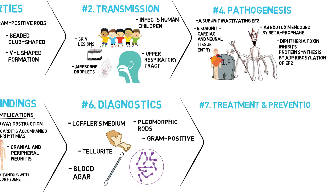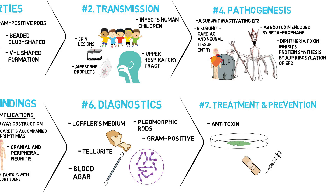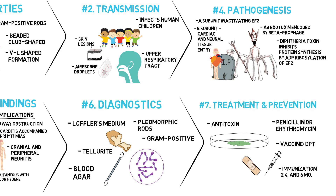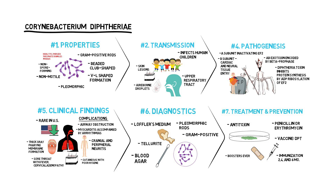Treatment. The treatment of choice is antitoxin. The toxin binds rapidly and irreversibly to cells, and once bound cannot be neutralized by antitoxin. Treatment with penicillin G or erythromycin is also recommended, but neither is a substitute for antitoxin. Immunization consists of three doses given at 2, 4, and 6 months of age, with boosters at 1 and 6 years of age.